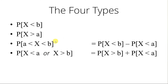Type 3 can be rewritten in this form: the probability that X is less than the upper value, minus the probability that X is less than the lower value. And type 4 can be written as: the probability that X is greater than B, which is the second part, plus — because it's an or — the probability that X is less than A, which is the first part.